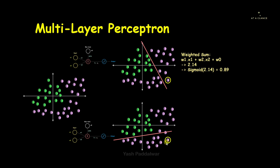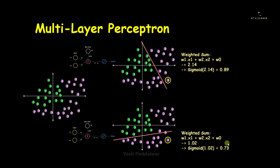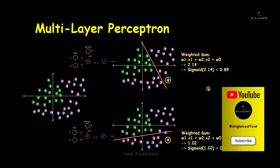Now for the second perceptron: using its classifier, the weighted sum for the same data point is 1.02, and applying the sigmoid function gives 0.73. We now have outputs from both classifiers — 0.89 from the first and 0.73 from the second — and we need to combine them to generate a single final output that determines which class this data point belongs to.